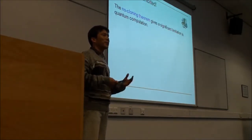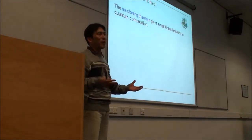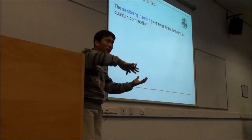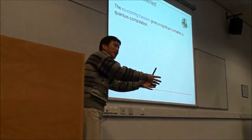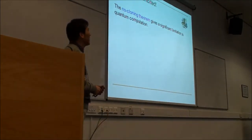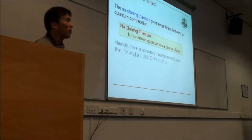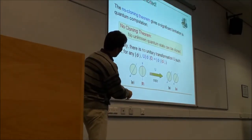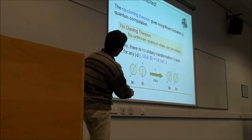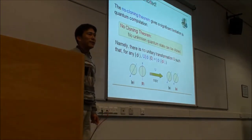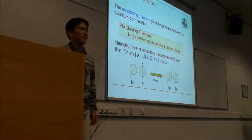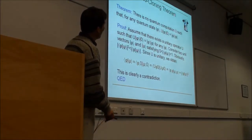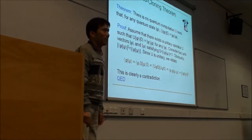The catch is that we can't store quantum information in the same way as classical computation, where we compute results, store them, copy them, and modify them. In quantum computation, the no-cloning theorem states there is no copying machine. If you have an unknown quantum state, we cannot create a perfect copy. The reason is simple: if there were such a unitary matrix, we get a contradiction.